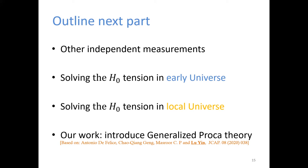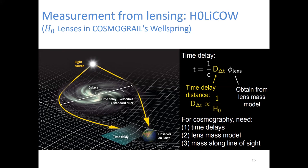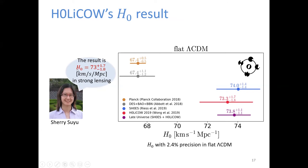Another model independent way to get H0 is from lensing named gravitational lensing. When the light crosses the galaxy and comes to Earth, there is a time delay from different distances. The result of H0 in gravitational lensing is around 73, and this H0 result from strong lensing is almost the same as the result from supernova.